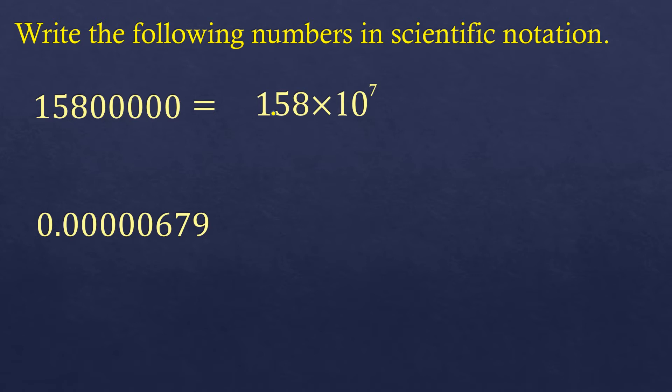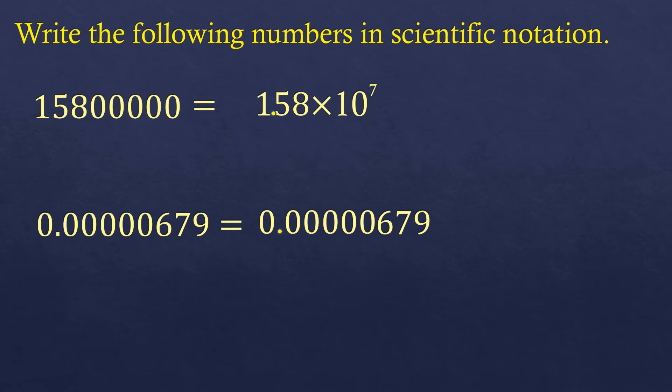Now if it's a very small number, say 0.0000679, and we want to convert it into scientific notation to avoid so many zeros, here's how you do it. We're going to move the decimal point to the right, up to the first non-zero digit. The decimal point must be placed at the right side of the first non-zero digit.